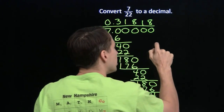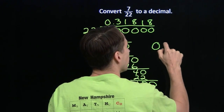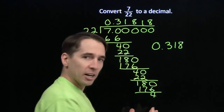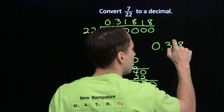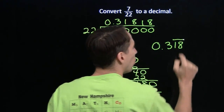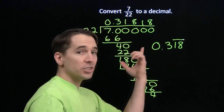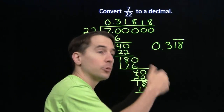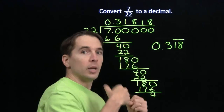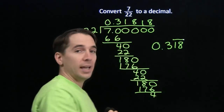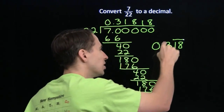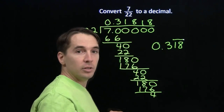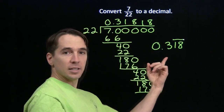So we use our notation again: 0.318. And here we have to be careful — the bar we put on there to say repeating goes only over the 1 and the 8. It doesn't cover the 3. If it covered the 3, that'd be 0.318318318 repeating. But we just want 3, then 18 repeating. So we put the bar only over the 1 and the 8. And that's how we write 7 over 22 as a decimal.